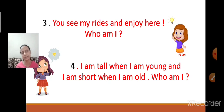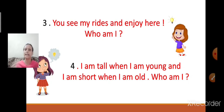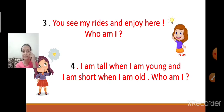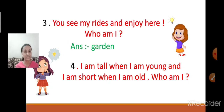Question number three. You see my sights. You come and enjoy here and you see so many sights over here. Who am I? Think. It is a garden — it is a place where you go and enjoy so many sights.